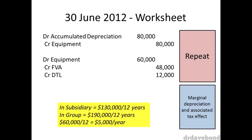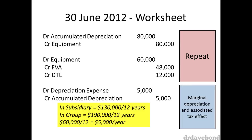In the subsidiary, the equipment is being depreciated at $130,000 over 12 years, but for the group it is being depreciated at $190,000 over the same length of time. This means that the group should actually show an additional $60,000 in depreciation expense over 12 years, or $5,000 per year. The adjustment for this depreciation is simply to debit depreciation expense $5,000 and credit accumulated depreciation $5,000 — just like recording depreciation normally, but in this case it is occurring in the consolidation worksheet.